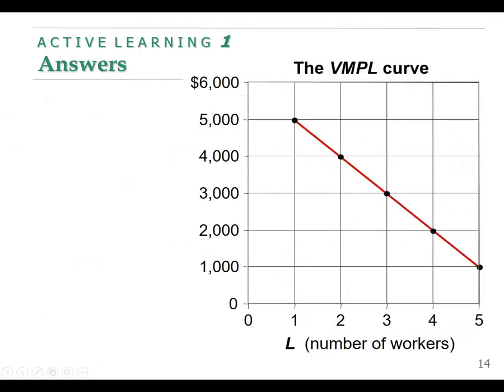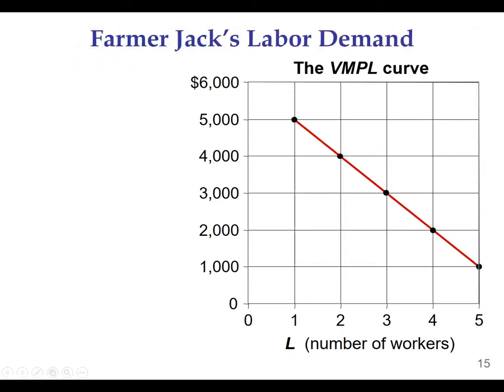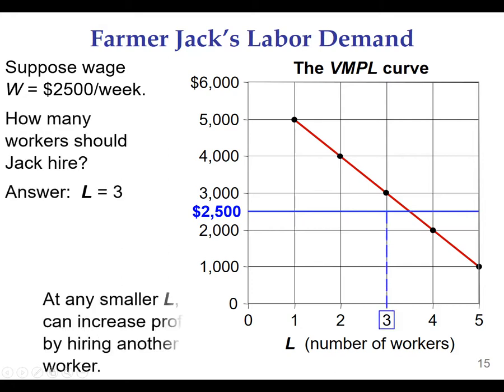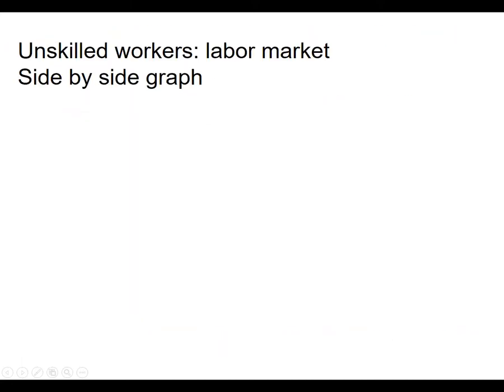We can graph all this, and this value of the marginal product of labor curve looks a lot like something we've already seen. It's a demand curve - it's the demand for workers. The supply of workers is just going to depend on the wage. So if the wage is $2,500 per week, we just draw that out there, and I'm going to hire three workers because if I hire the fourth worker, I'm going to pay them $2,500 and they're only going to earn me $2,000.